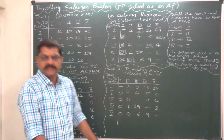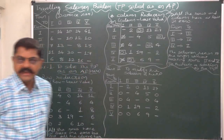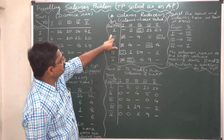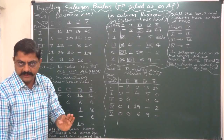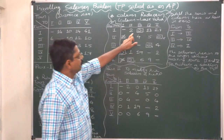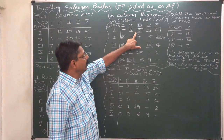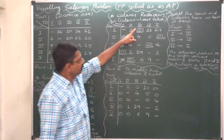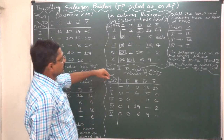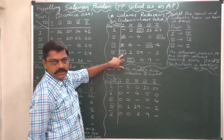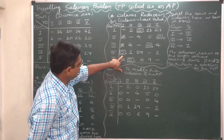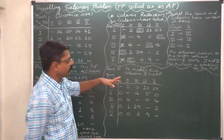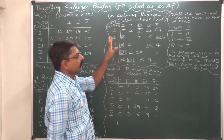So now we can go for making assignments. First, select the row with only one zero originally — that means without cancelling other zeros. Row one has only one zero, so the first assignment is in row one. There is no other zero in column three, so no cancellation needed. Similarly, row four has only one zero originally, so the second assignment will be here. In the same column there are other zeros and we have to cancel them.